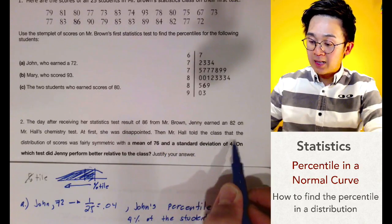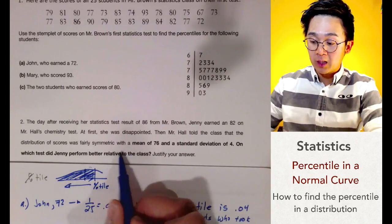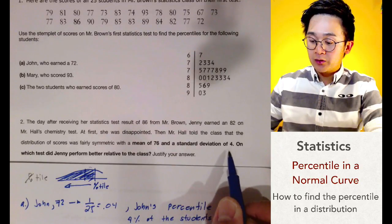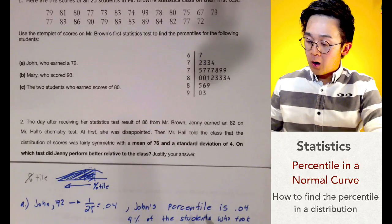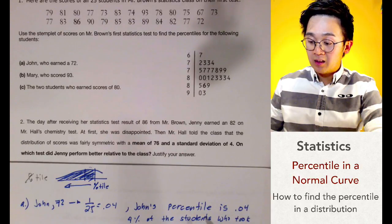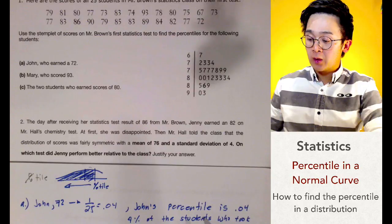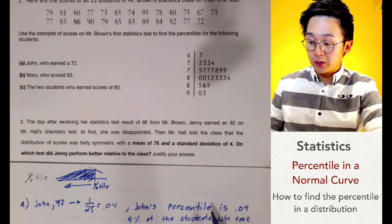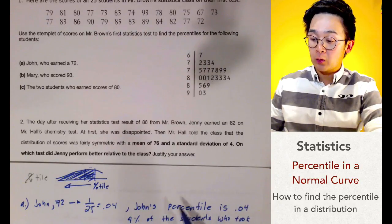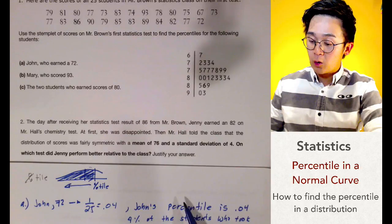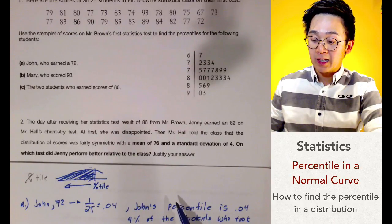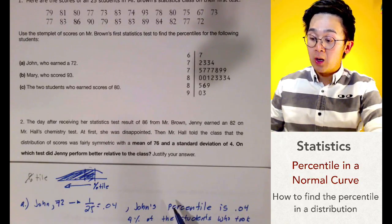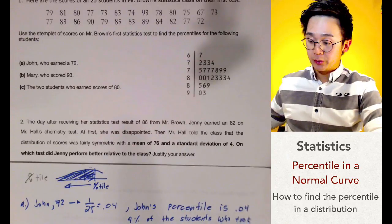But Mr. Hall told the class that the distribution of scores was fairly symmetric with a mean of 76 and a standard deviation of 4. The question is: on which test did Jenny perform better relative to the class? If we only compare raw scores, 82 is lower than 86, but computing her percentile in each class may give a better conclusion.